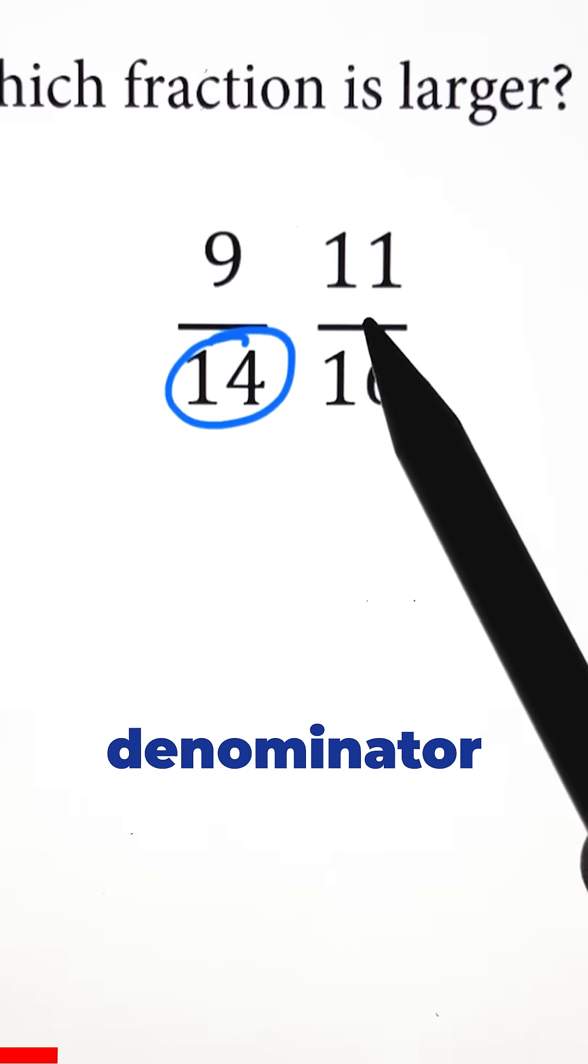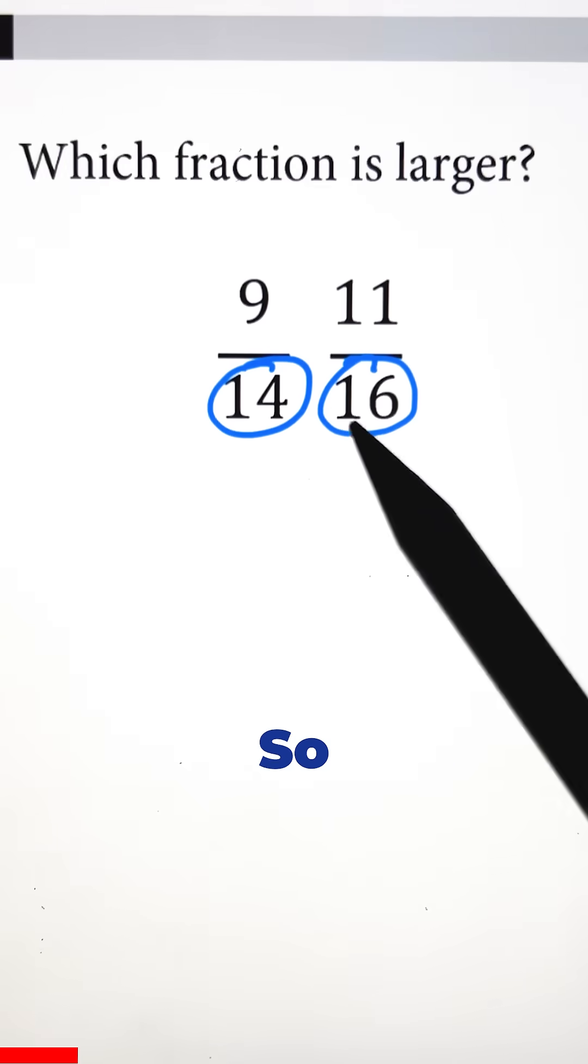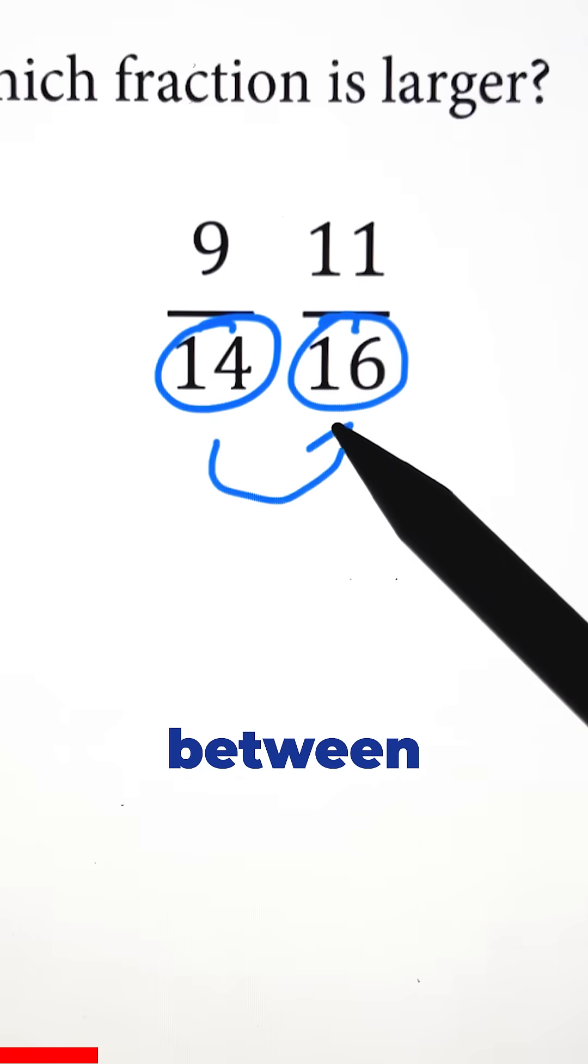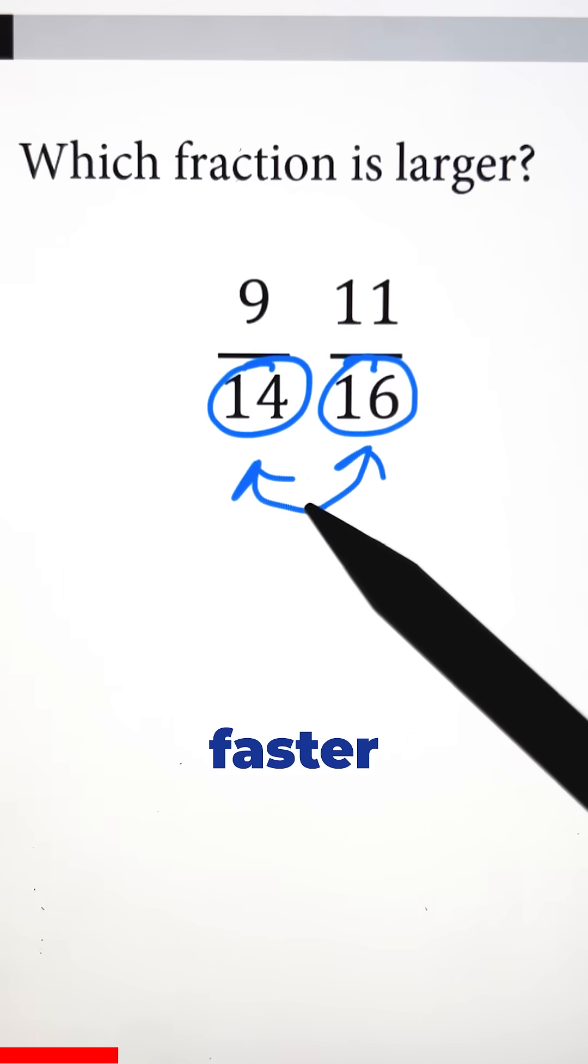A denominator of 14 and a denominator of 16 is really weird. They're really big and hard to work with. So we're going to use an easier method where we don't even have to get a common denominator because in school that's what teachers would tell you to do, but I'm going to teach you a faster way.